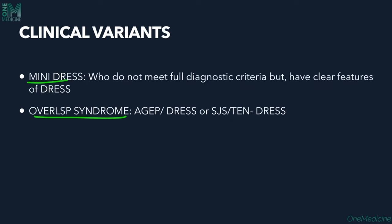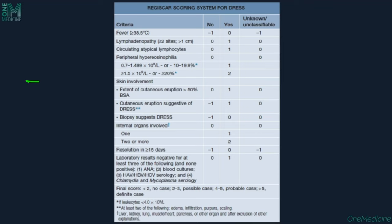Clinical variants include mini-DRESS (patients who do not meet full diagnostic criteria but have clear features of DRESS) and overlap syndrome (where DRESS overlaps with AGEP or SJS/TEN). The RegiSCAR scoring system for DRESS includes: fever, lymphadenopathy of more than two sites with nodes over 1 cm, circulating atypical lymphocytes, peripheral eosinophilia, skin involvement of more than 50% BSA with typical cutaneous features, biopsy-confirmed DRESS, and one or more internal organs involved.